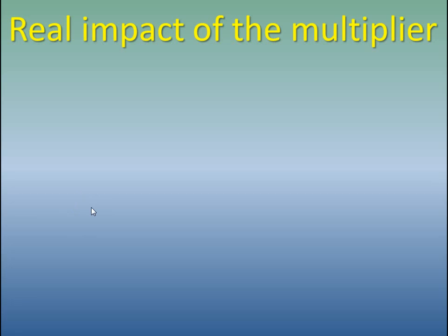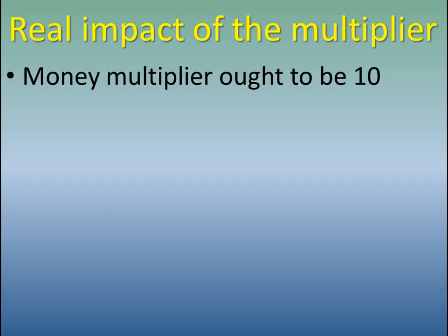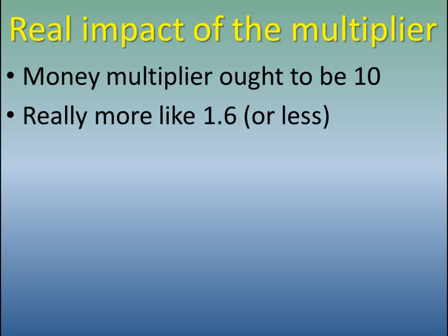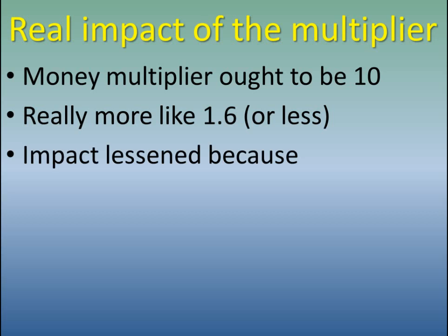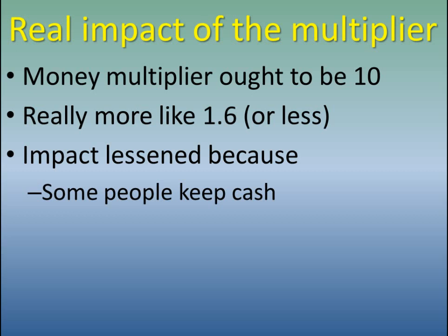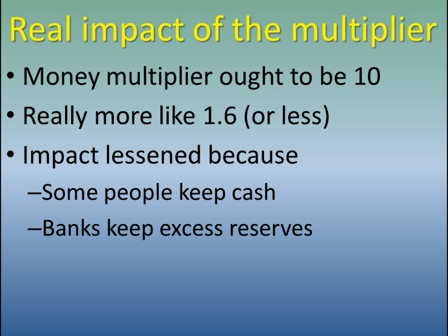Understand that what I've described is theoretical. In real life the multiplier isn't that large. With a 10% reserve ratio the theoretical multiplier should be 10, but economists estimate the real money multiplier is about 1.6 or less. Why? Two main reasons: some people keep cash in their pockets and don't deposit everything right away, and more importantly in today's economy, banks keep excess reserves — they don't lend up to the required reserve ratio limit. So the real reserve ratio is above 10%, making the impact less than theory suggests. We'll practice this more on the problem set.